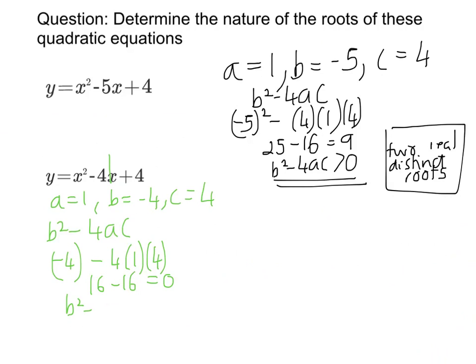So in this case, b squared minus 4ac is equal to 0, which means it crosses the x-axis only once. So we have one real root.